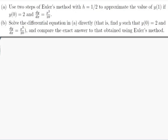The question is: use two steps of Euler's method with h equals a half to approximate the value of y(1) if y(0) is 2 and dy/dx is x squared over 10. And part b, solve the differential equation in part a directly and compare the exact answer to that obtained using Euler's method.